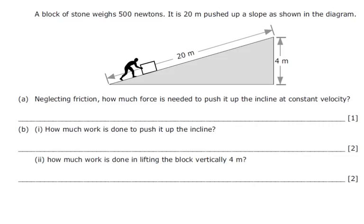A block of stone weighs 500 Newtons. It is 20 meters pushed up a slope as shown in the diagram. Neglecting friction, how much force is needed to push it up the incline at a constant velocity? Well firstly what we're going to imagine is what if I had the box here and I just moved it up this way. Because I'm still doing work against gravity and it's going to be the same amount.